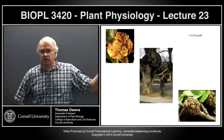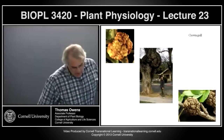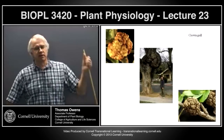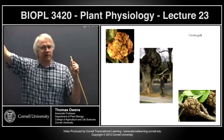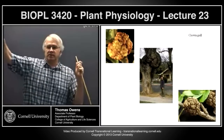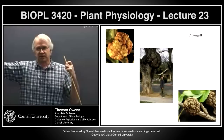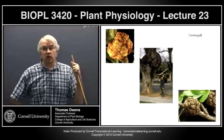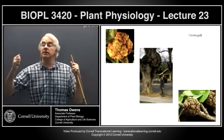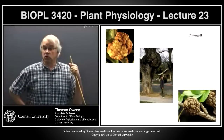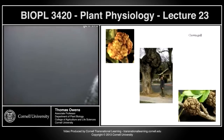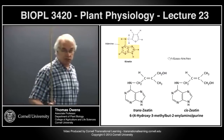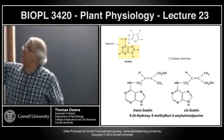The most bizarre discovery was the observation that autoclave herring sperm — heat-damaged DNA — could promote cell division in culture. From the autoclaved herring sperm, they discovered the compound promoting cell division was kinetin, an adenine derivative. The search then went out to find naturally occurring compounds, and the first ones were isolated from corn kernels — the compound was called zeatin. These have the adenine ring with an isopentanyl group attached.